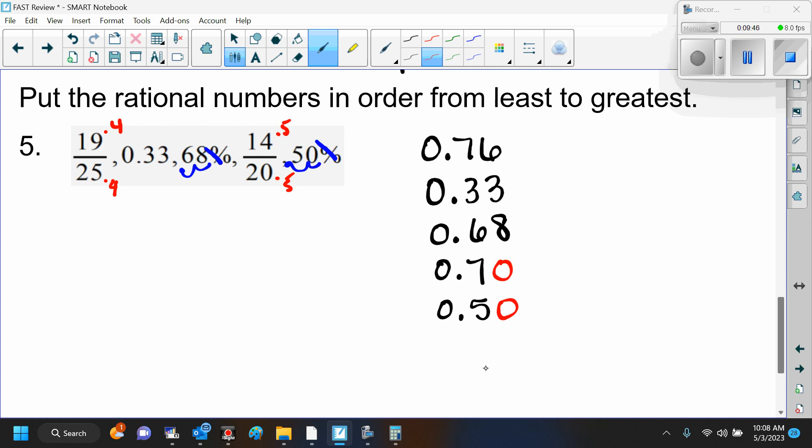So now we can put them in order from least to greatest. And I'm just going to number them, okay? So which one comes first? 0.33. And what comes next? 0.50. And then what comes next? 0.68. 0.70. And 0.76. Is everybody clear? Yeah. All right. Very good. That's it.